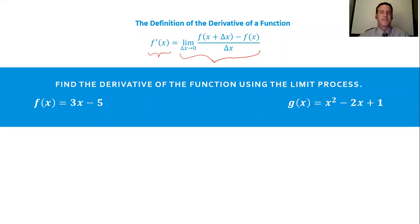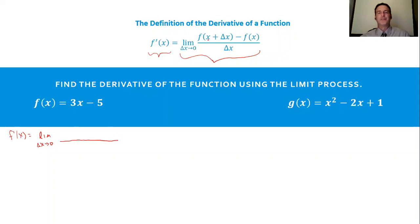So find the derivative of a function using the limit process, which is what we have up here. I will represent that with an f prime of x, and say that this is the limit as delta x goes to zero. Then what I need to do is use this expression on the top over a delta x to eventually find my limit.